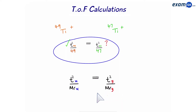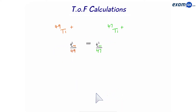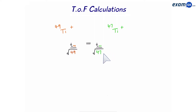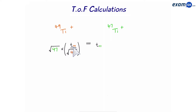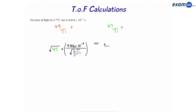We want to work out the time of Ti-47, so we square root both sides — removing the squares from times, and the Mr values become square-rooted. We then multiply across by the square root of 47. The time of Ti-49 is given in the question as 9.816 × 10⁻⁷. Plugging that in gives us 9.613 × 10⁻⁷ for the time of flight of titanium-47.